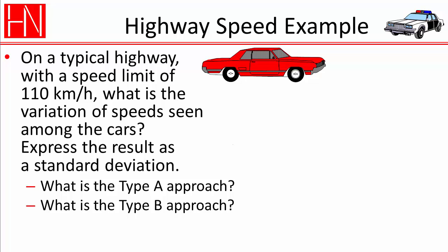Let us take an example of the difference between a Type A evaluation and a Type E evaluation. Let's take as our example something that most people have experienced. Let's say that we're on a typical highway where the speed limit is 110 kilometers per hour, and we want to say what's the variation of speed we see amongst the cars, expressed as a standard deviation. That's our example for Type A and Type B.